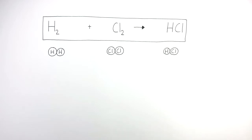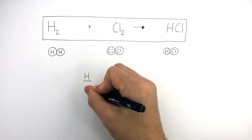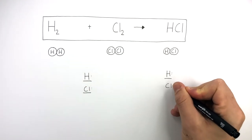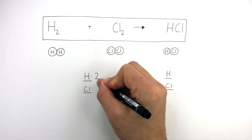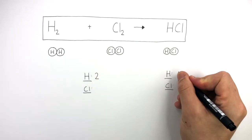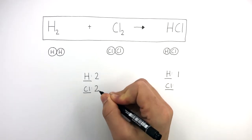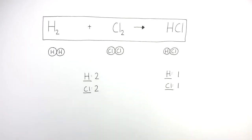A technique you can use to balance equations is to write out which elements are present on the left and the right. There's hydrogen and chlorine on the left, and hydrogen and chlorine on the right. The equation tells us there are two hydrogen atoms on the left and one hydrogen atom on the right, and two chlorine atoms on the left and one chlorine atom on the right.